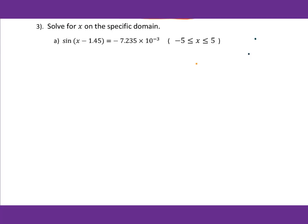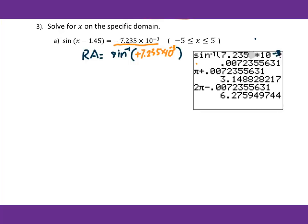Now let's go to number 3. Solve for x on the specific domain. We have sin(x minus 1.45) equals negative 7.235 times 10 to the negative 3 power. First of all, it's already isolated sin, so we directly go to the reference angle. For the reference angle, we do inverse sine, but remember this number should be made positive because the reference angle is on the first quadrant — that's positive 7.235 times 10 to the negative 3 power. We put it into the calculator and got 0.00724.